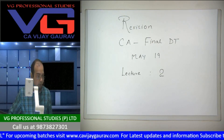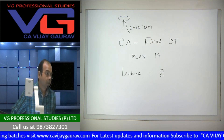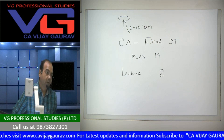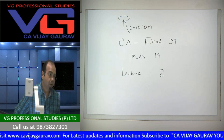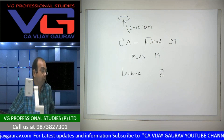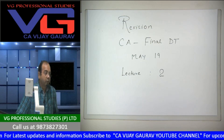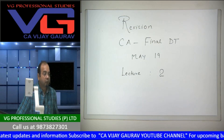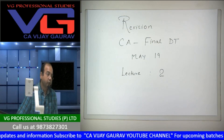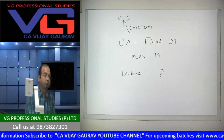Revenue के लिए पहले भी tax होता था। अब Capital भी इसमें add कर लिया है। Capital के case में भी अब Business Profession की income होगी — आपने कोई machine book की terms कि भी।